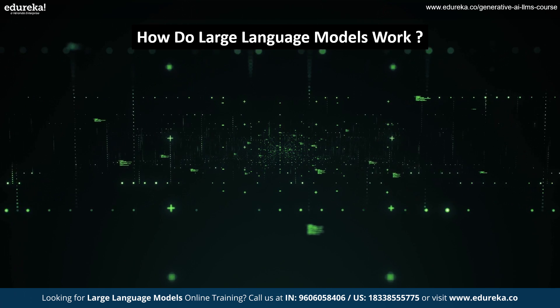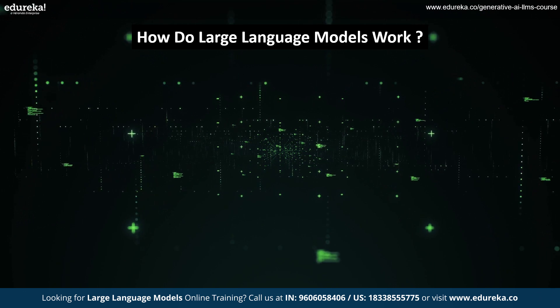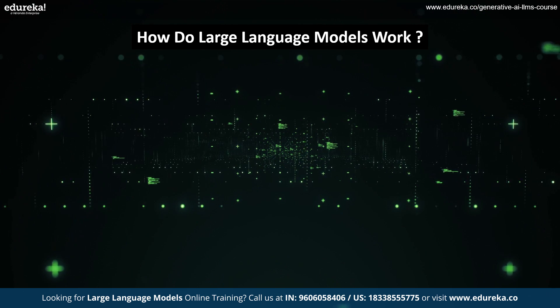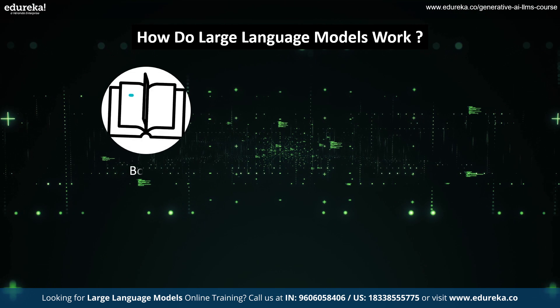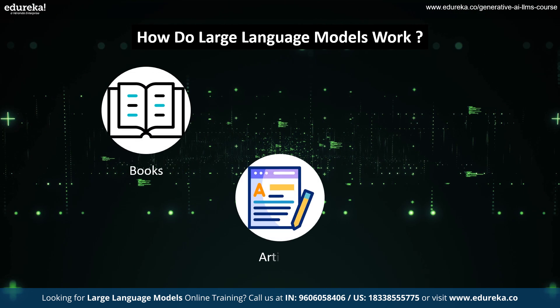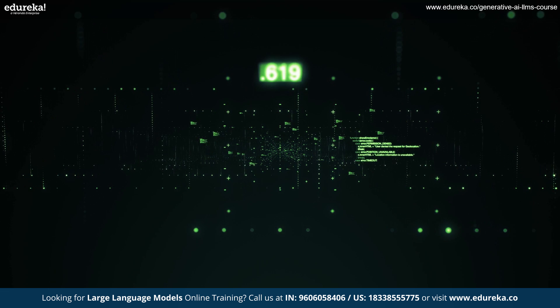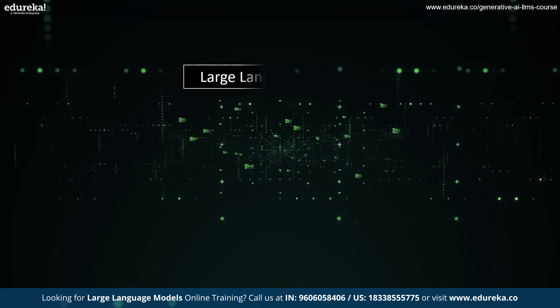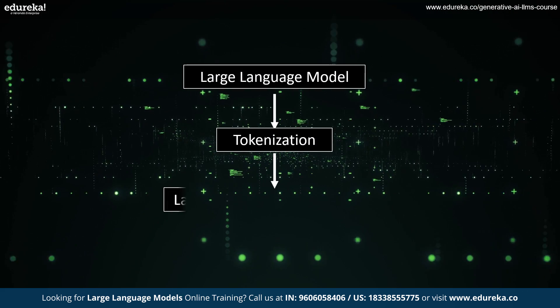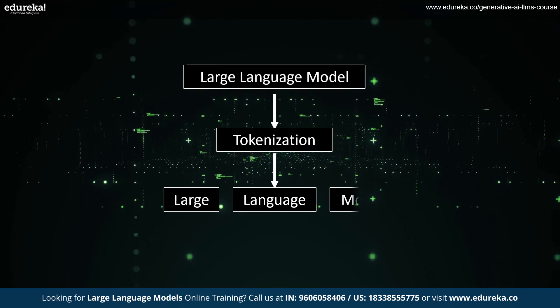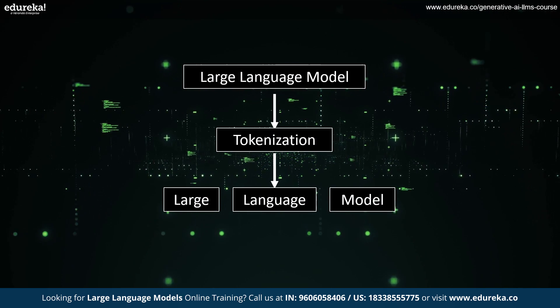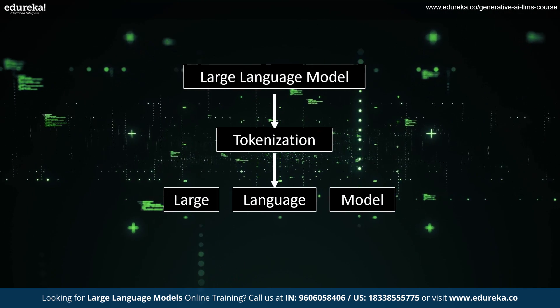First, the model is trained on a massive dataset of text such as books, articles and websites. This dataset is used to learn patterns and relationships in language. The text is then broken down into individual words or tokens, which are used as input for the model.